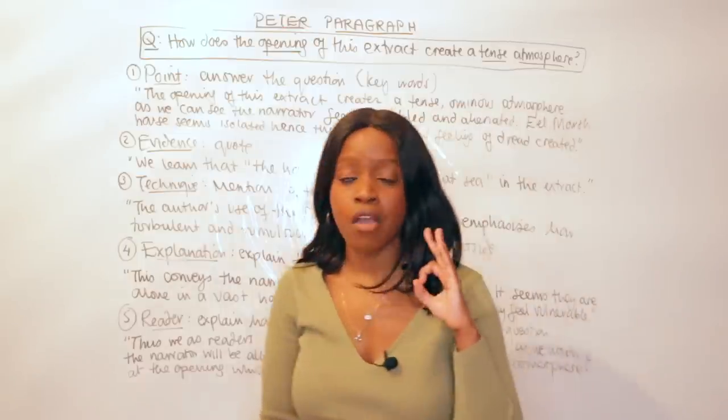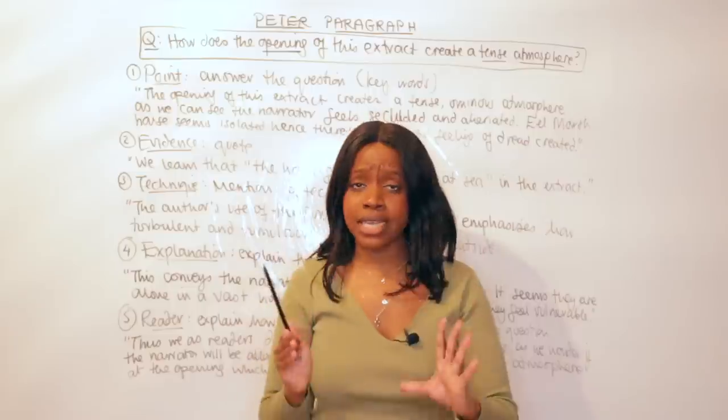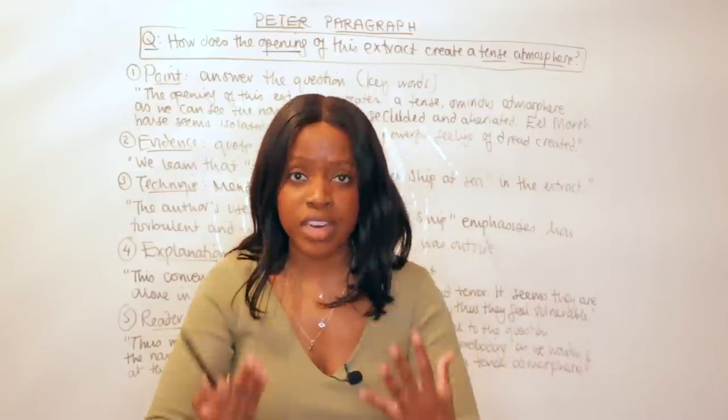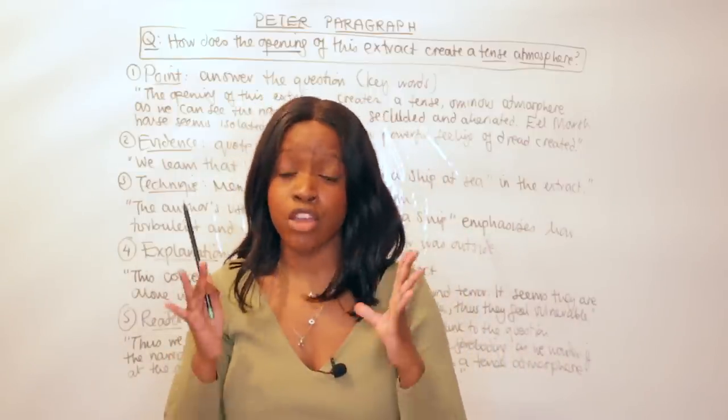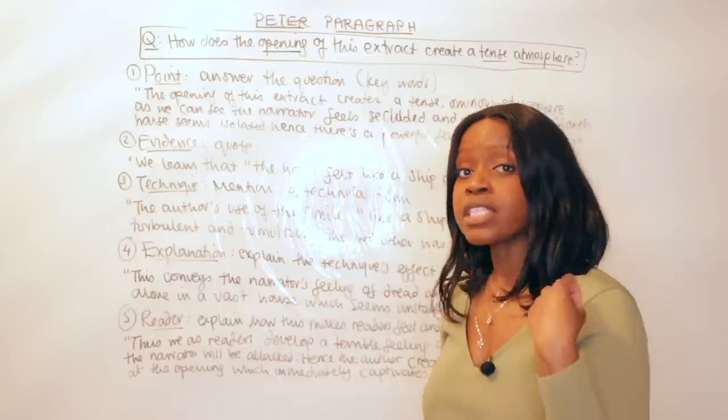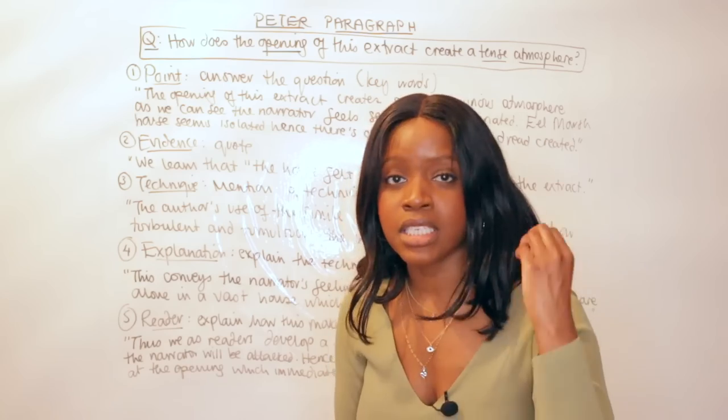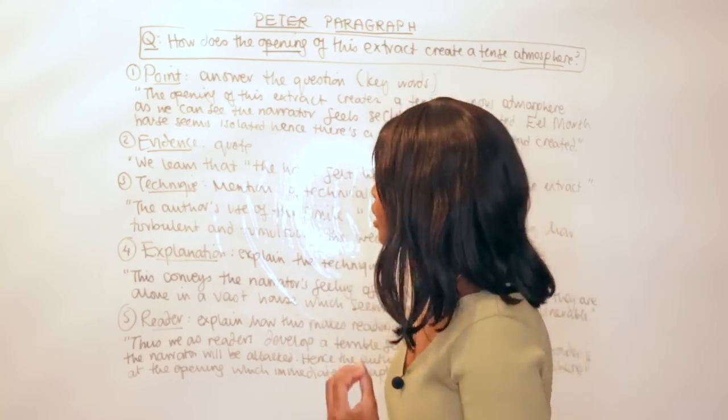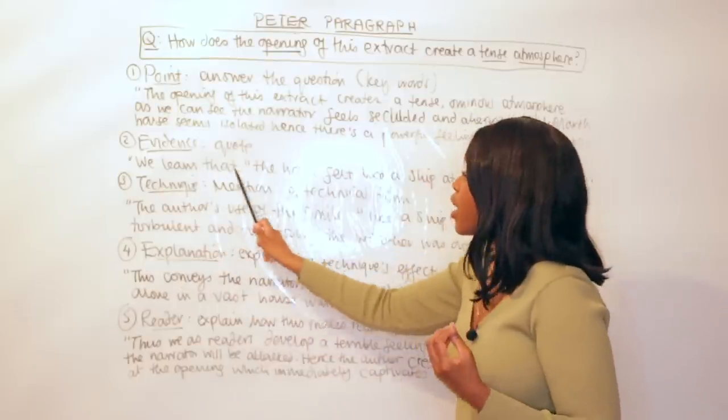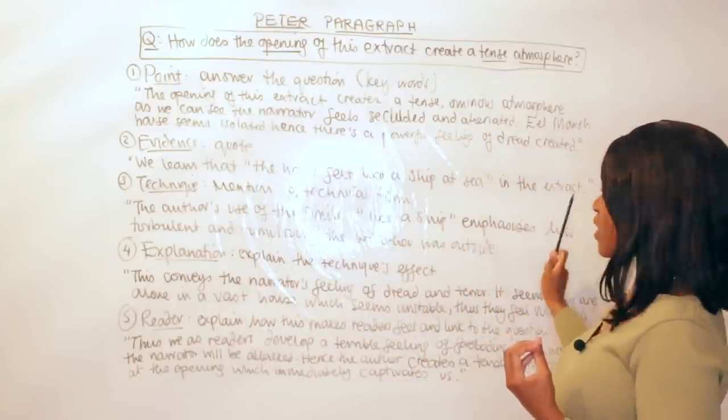So I've talked about the opening of this extract, a tense atmosphere. The reason why I have restated these words is because I'm showing the examiner really clearly: Hey, I understand this question and I'm going to begin by addressing this question directly. You have to do that in your opening Point. So that's the P in my PETA paragraph. Now let's look at the E in my PETA paragraph, which is Evidence. Evidence simply means quote from the text to support your opening Point.